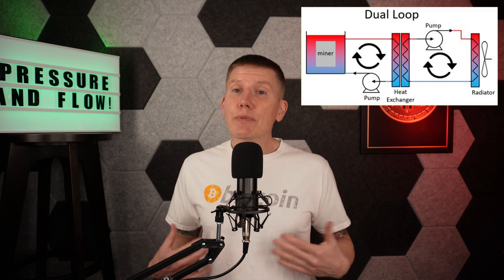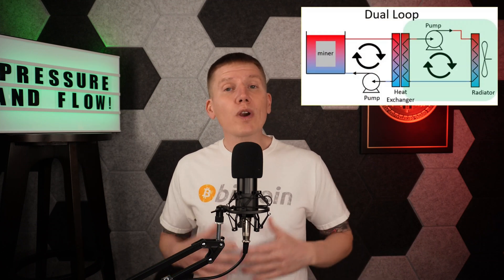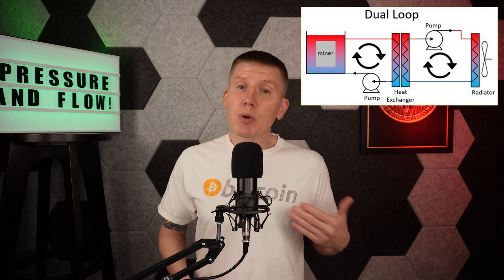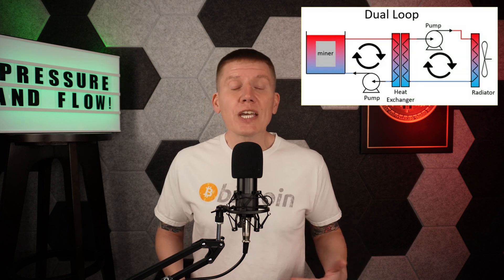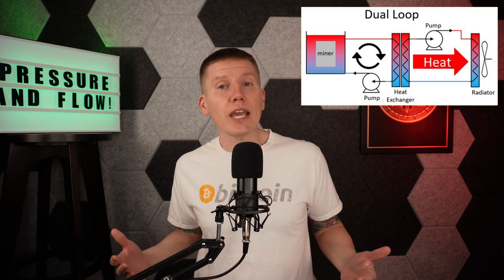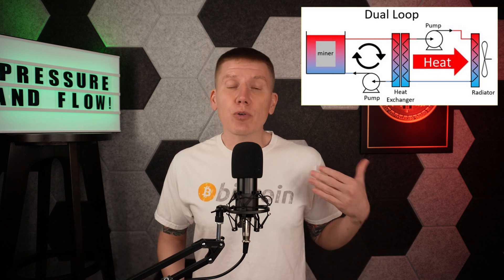On with the episode. In this episode, I'm going to cover the design of the radiator cooling loop for a dual-loop immersion mining system. The purpose of this loop is to transfer the heat from the heat exchanger to the radiator outside the house, where miner heat is going to be released into the environment. This loop can also be used to transfer heat to your furnace, your hot water heater, and wherever else in your house you want to use your miner heat.